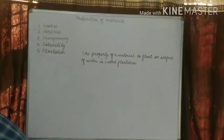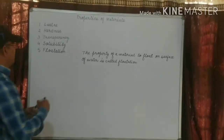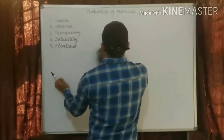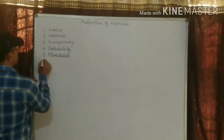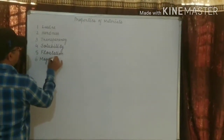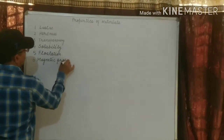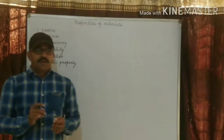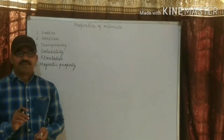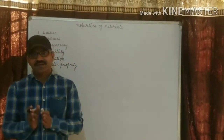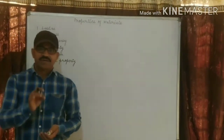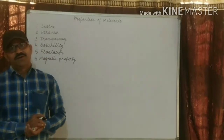Next is magnetic property. A magnet is a substance that attracts a piece of iron and substances made of iron. Materials that get attracted towards a magnet are called magnetic materials — for example, iron, nickel, and cobalt. Materials that do not get attracted towards a magnet are called non-magnetic substances — for example, rubber and plastic.